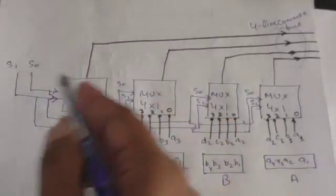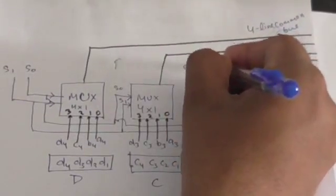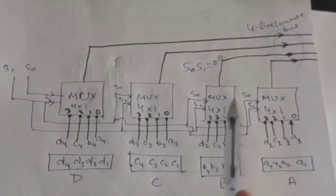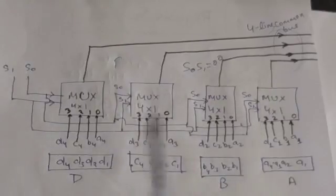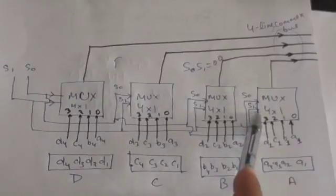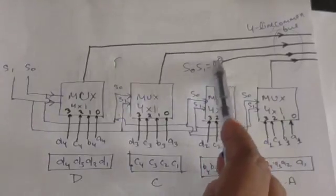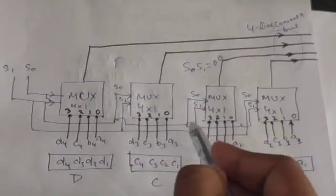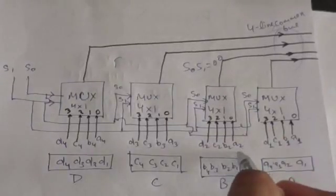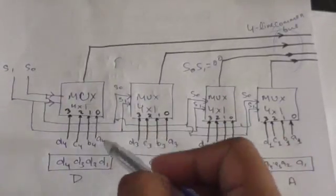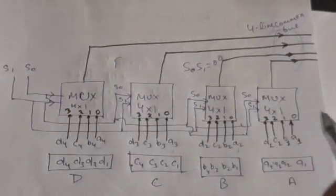When the value of selection lines S0 and S1 is 00, data input 0 of all four multiplexers is selected and applied to the output. So in each multiplexer, A1, A2, A3, and A4 are the outputs respectively, meaning the bus lines receive the content of register A — register A's content is placed on the common bus.